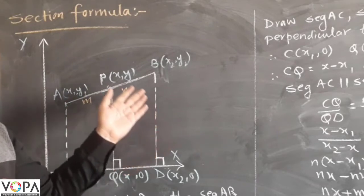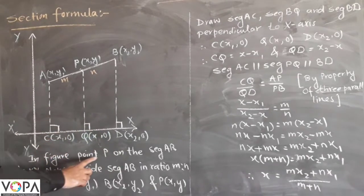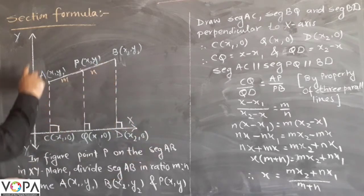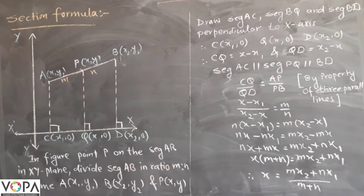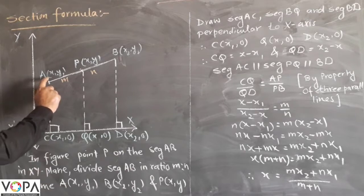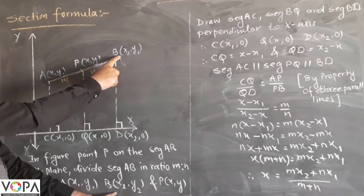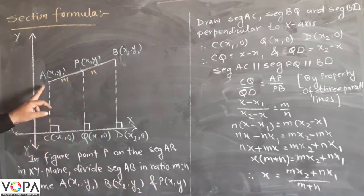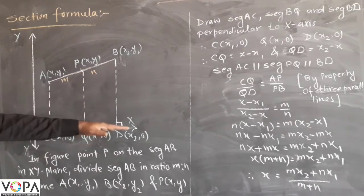Section formula, we are now going to discuss that. Suppose, consider in figure point P on the segment AB in plane with XY plane divide segment AB in ratio M:N. Draw the three perpendiculars AC, PQ and BD on X axis.